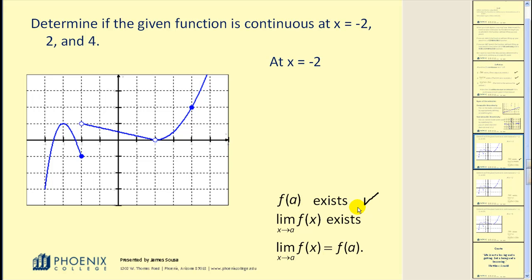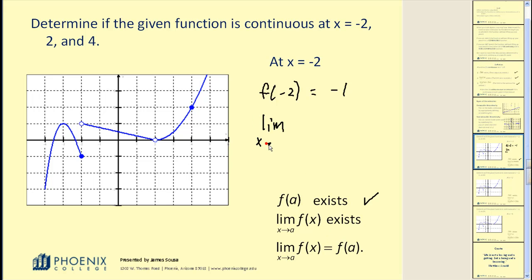First, f of a exists. In this case f of a would be f of negative 2, and f of negative 2 would be equal to negative 1 from our graph — so it satisfies that condition. The next condition: the limit as x approaches a must exist. So we're trying to figure out if the limit as x approaches negative 2 exists.